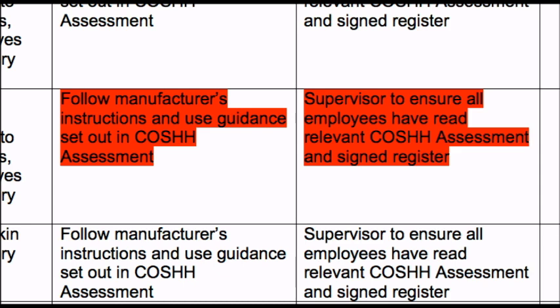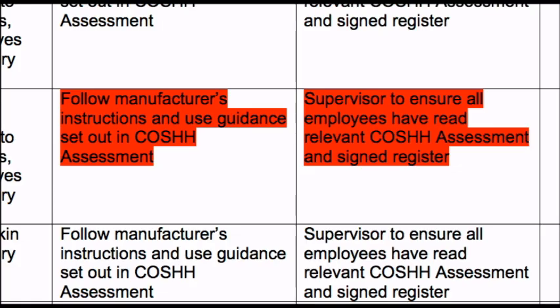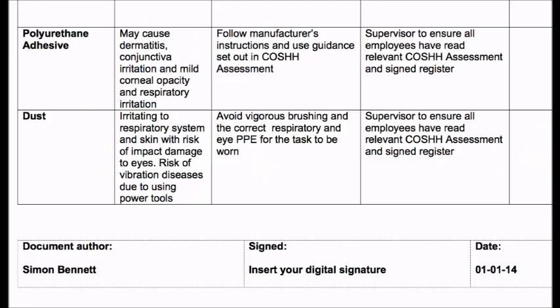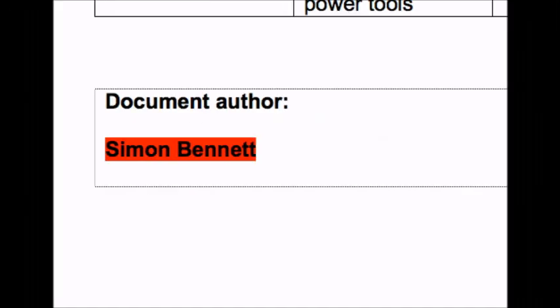On this particular risk assessment, one of the substances that differs in columns 3 and 4 is dust. Here we can see control measures set out in column 3 to prevent excessive dust and to protect the operative. Finally, we come to section 4 of this risk assessment. In this section you simply type your name, sign and date. I'm in favour of using digital signatures on health and safety documents so that I can email signed electronic copies to people.